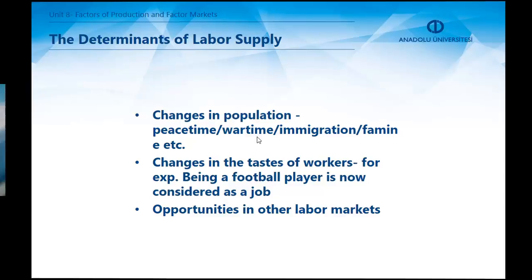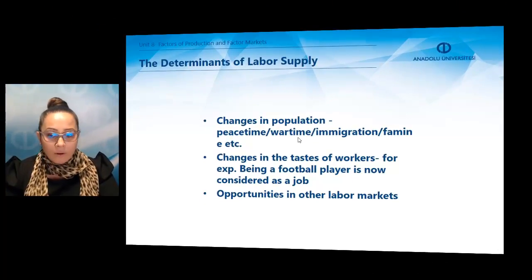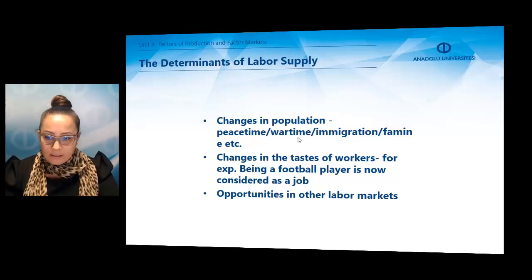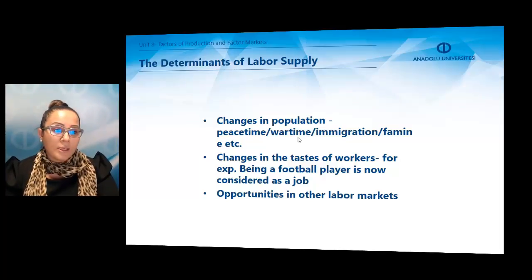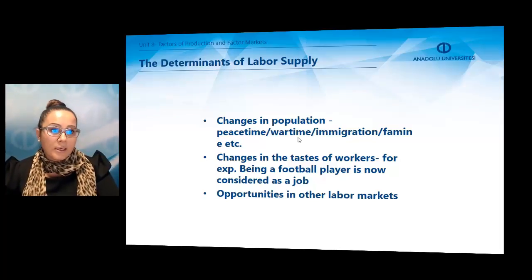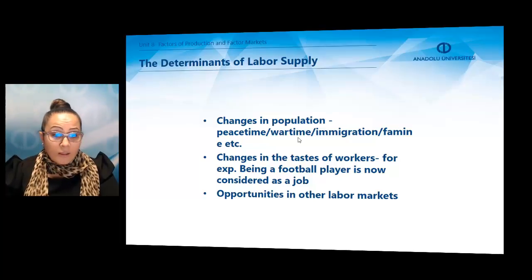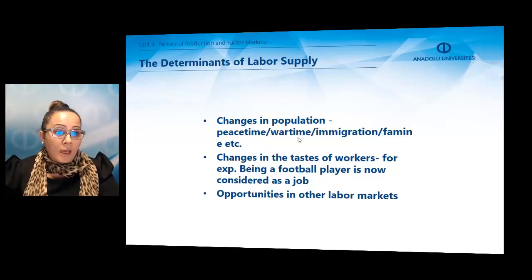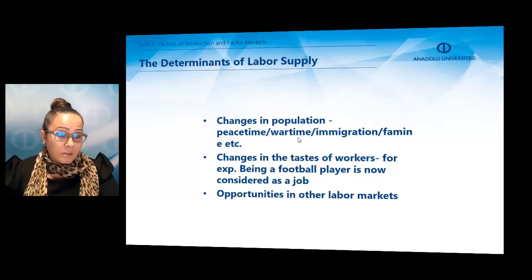A market supply curve for labour shows the total amount of labour that workers are ready to supply at a given wage. This amount is affected by some other factors assumed to be constant when the supply curve is drawn: changes in population — which may be affected by peacetime or wartime, immigration, or famine — changes in the tastes of workers (for example, being a football player is now considered a job), and opportunities in other labour markets.